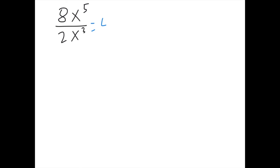Now let's look at some examples of dividing monomials. Just like with multiplying, with dividing you do everything separately. Here we have 8 divided by 2, which gives us 4, and then x to the 5th divided by x to the 3rd — that's where we subtract the exponents — so 5 minus 3 gives us 2, so x squared.